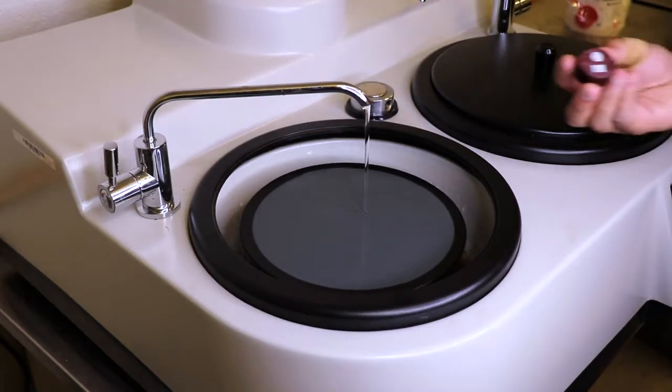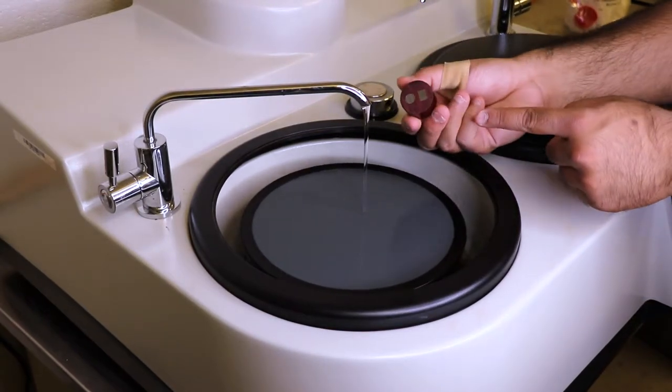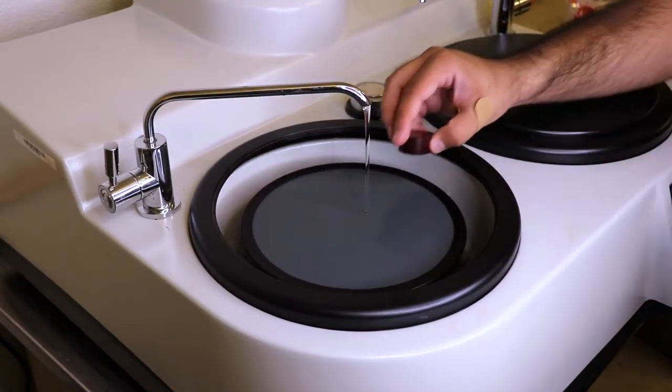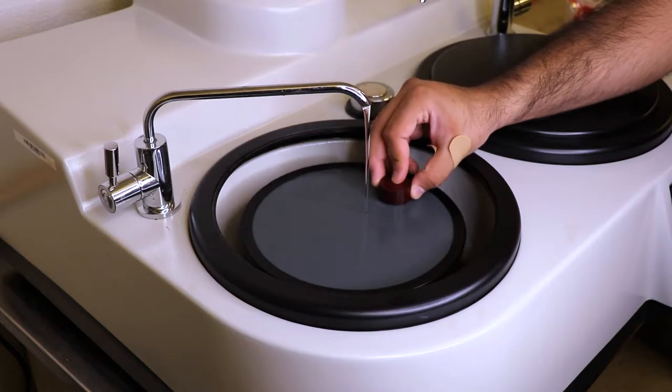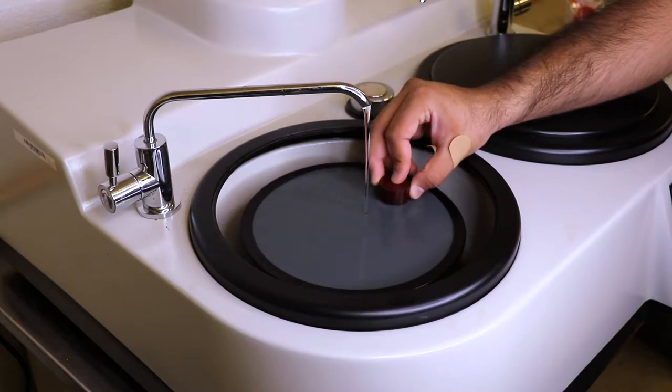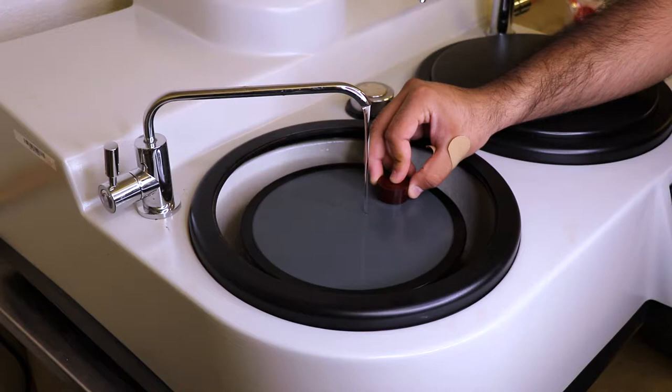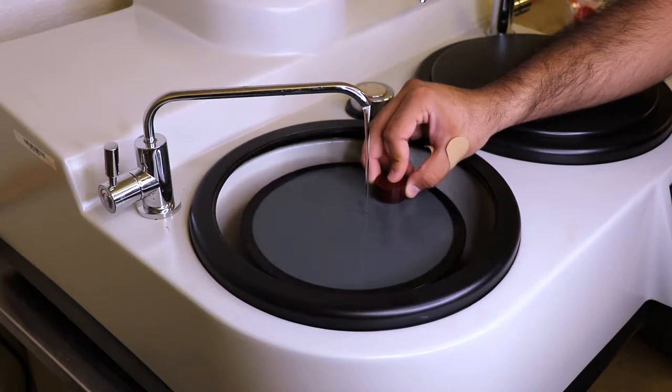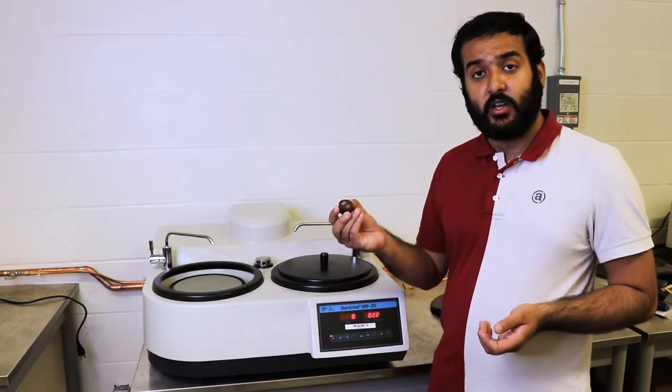You want to make a note that when you're going up the different grit of sandpaper, you want to switch the direction that you sand your sample. It should be in a crisscross pattern as you go through the different types of sandpaper. This is to prevent deep gouges and any imperfections in your actual sample itself.